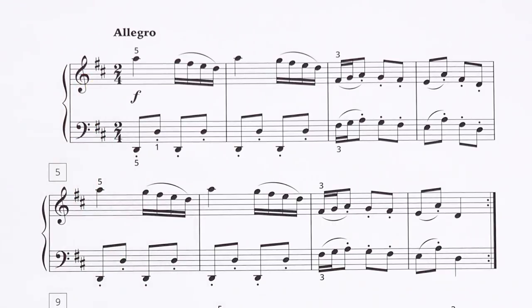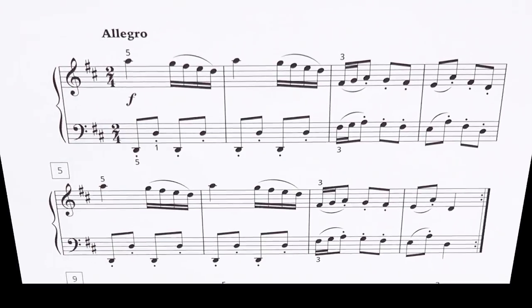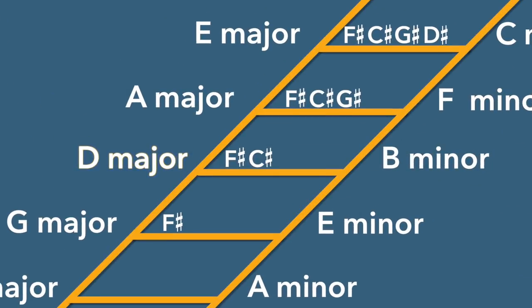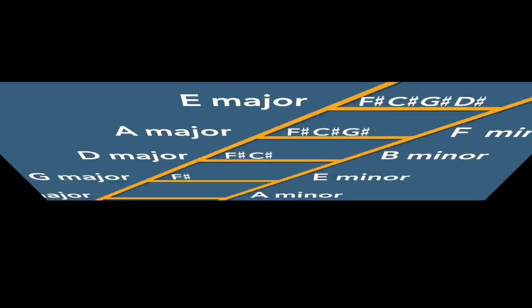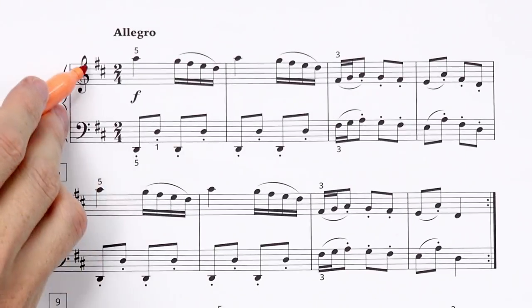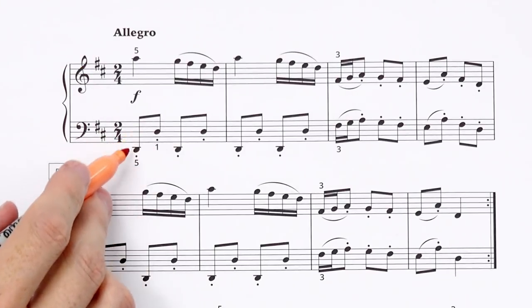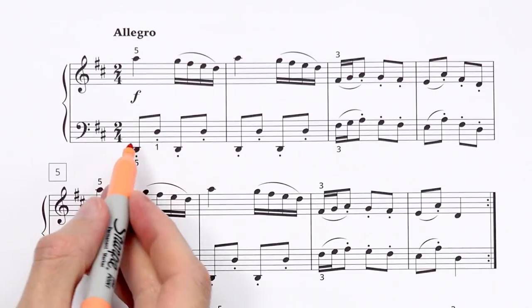What did you figure out for the key of this piece? We have two sharps which could mean D major or B minor. If you forget that you can just use your ladder of fifths, which we went over in a previous lesson, to know what key we could be in.